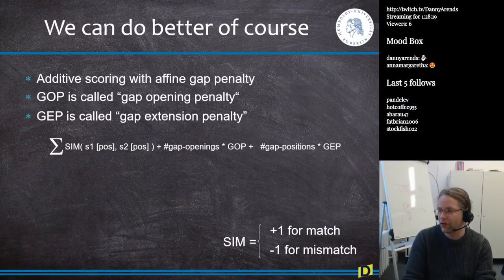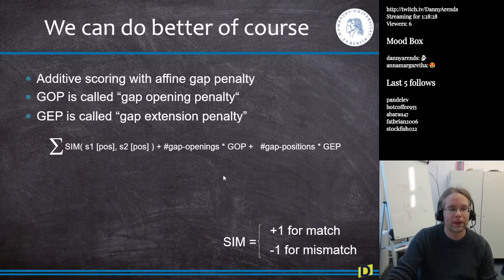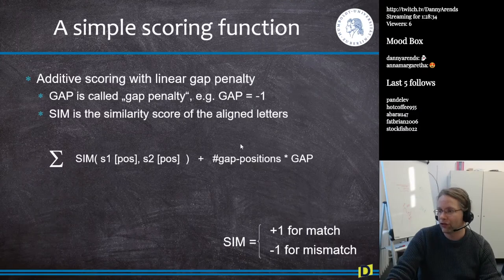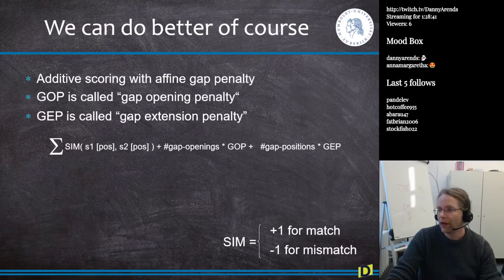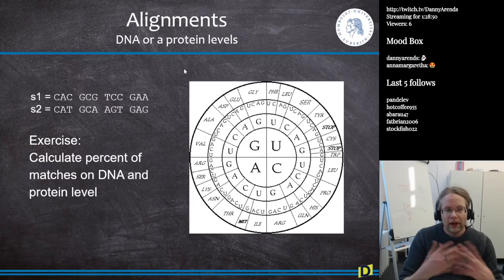This is more in line with how biology works. If 15 base pairs are inserted into a sequence, those 15 base pairs are more likely to be next to each other. The difference between a linear gap penalty — where every gap gets -1 — compared to the affine gap penalty, where opening a gap is expensive but extending it is cheap, reflects biological reality better.